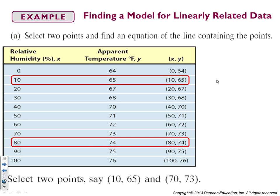So we're going to pick (10, 65) and (70, 73), even though this one is highlighted. So we're actually picking (80, 74), so please ignore that. There we go. Now we're correct. All right, so we're going to subtract the y's, 74 minus 65, and then subtract the x's, 80 minus 10. We get 9 over 70.